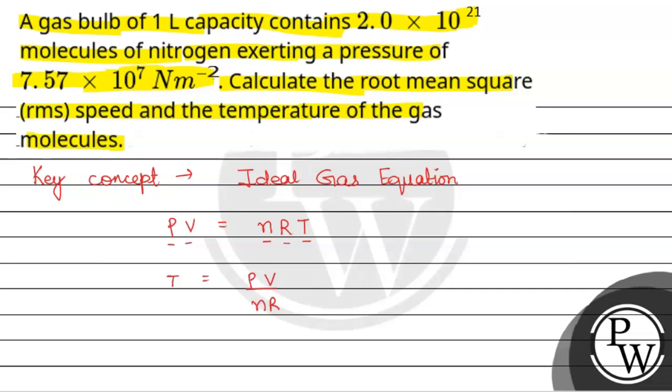Now if we need to find the RMS speed, it is given by the formula: under root 2RT upon M, where M is the molecular weight.